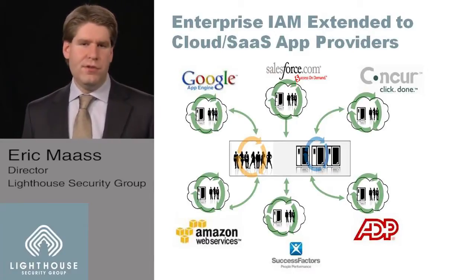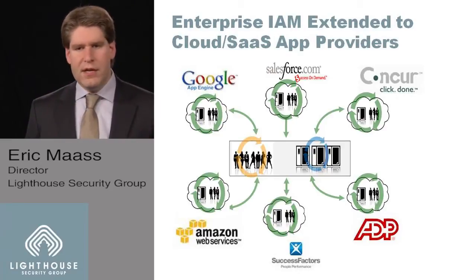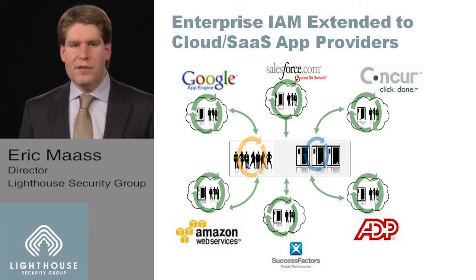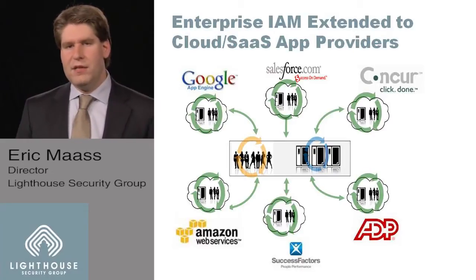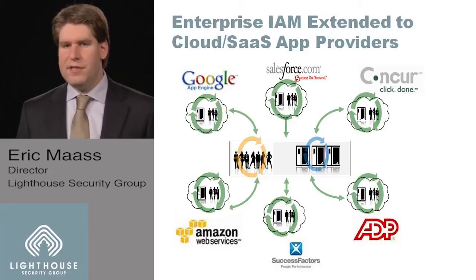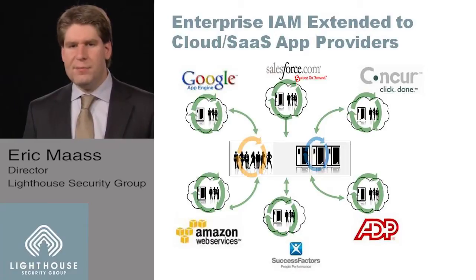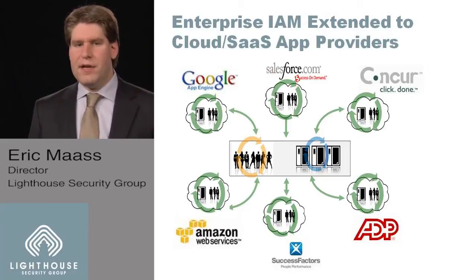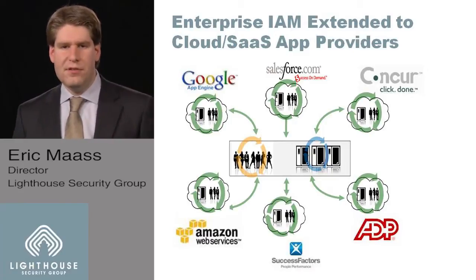But what happens when those resources are now external and we have applications such as Salesforce, Google, or ADP, and we're concerned with making sure that authoritative information gets from our human resources systems and our policies about those individuals get enforced on those third-party applications? They're no longer in our data centers, no longer necessarily within our direct control — we can't physically touch them. But identity and access management technologies and the protocols evolving around federation do allow us to provision that type of information to these SaaS providers.